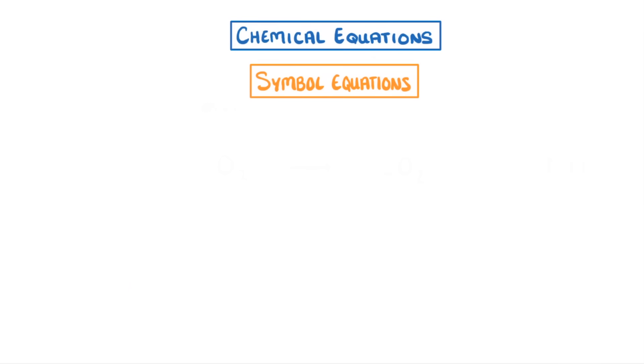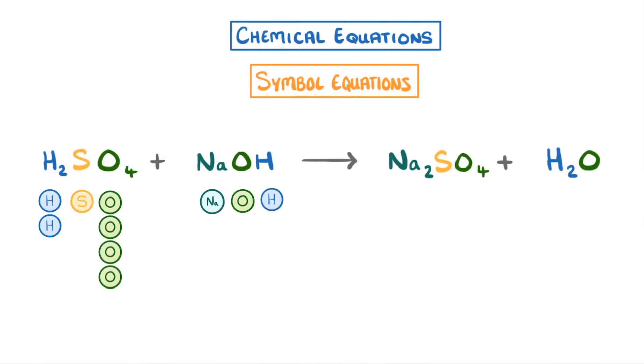Let's quickly try one more example. Sulfuric acid plus sodium hydroxide goes to form sodium sulfate plus water. On the left we have 3 hydrogens, 1 sulfur, 5 oxygens and 1 sodium. While on the right we have 2 hydrogens, 1 sulfur, 5 oxygens and 2 sodiums.